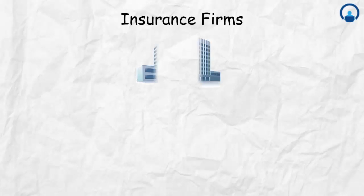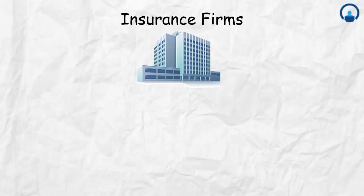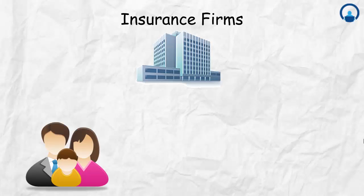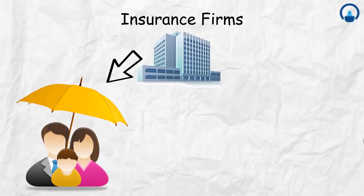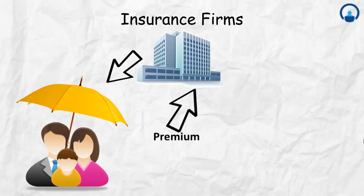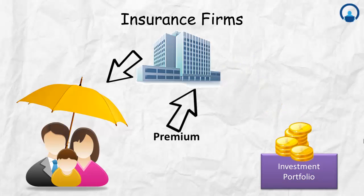Moving forward with the insurance firm — the insurance firm makes money by providing you with insurance. For providing you with an insurance policy, the firm charges you a premium. They make income on this premium and then invest that money in an investment portfolio. A good example is Berkshire Hathaway — Warren Buffett's company — which has many insurance policies and invests the premium income in its own portfolio.